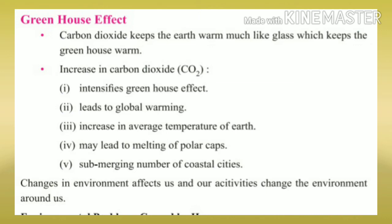When glaciers melt, the level of oceans and seas increases, leading to floods. The greenhouse effect causes an increase in the average temperature of the Earth, which may lead to the melting of polar ice caps. This results in the submerging of many coastal cities located near the coasts. Changes in the environment affect us, and our activities change the environment around us.